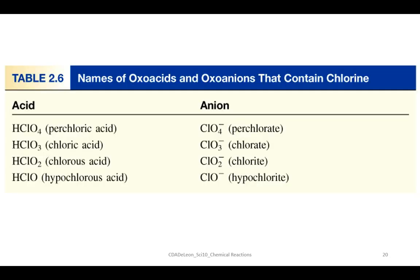These are some examples of oxo acids and oxo anions that contain chlorine. Perchloric acid has the anion perchlorate. Chloric acid has the anion chlorate. Chlorous acid has the anion chlorite. And hypochlorous acid has the anion hypochlorite.